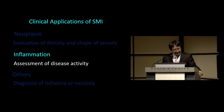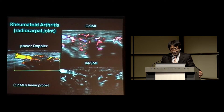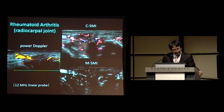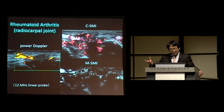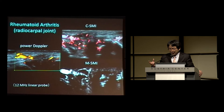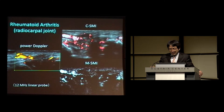SMI is also very useful in the assessment of disease activity. These pictures are taken from a radiocarpal joint in a patient with rheumatoid arthritis. With conventional power Doppler — also used to assess disease activity in RA — you can see several vessels inside the thickened synovial membrane. But SMI reveals more and more inflammatory vessels. Taking into account that more blood flow correlates with more severe inflammation, SMI could even change the scoring criteria for this disease.